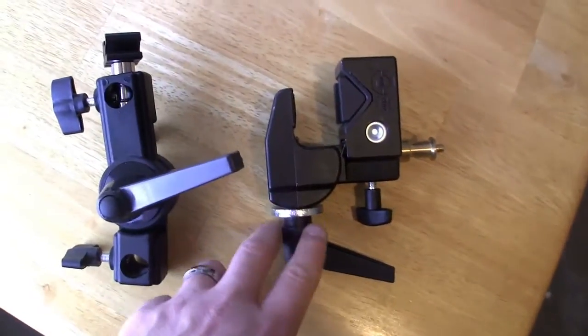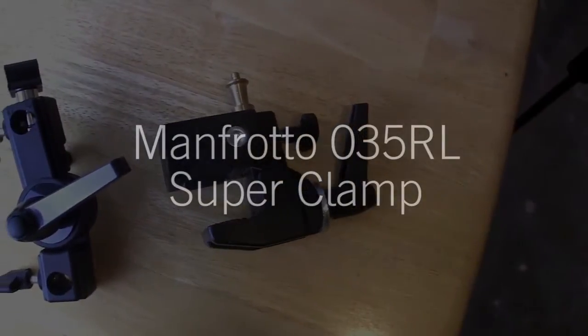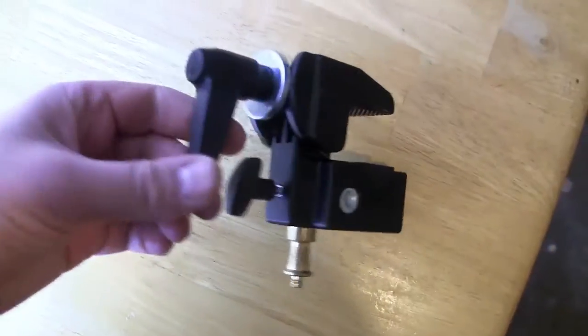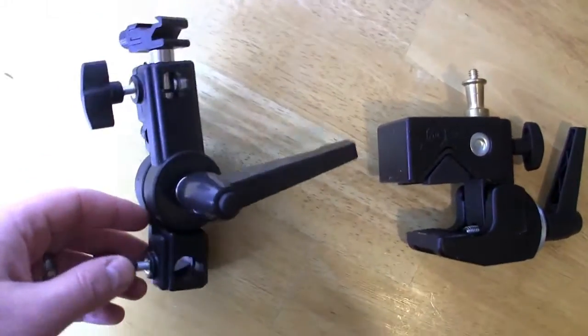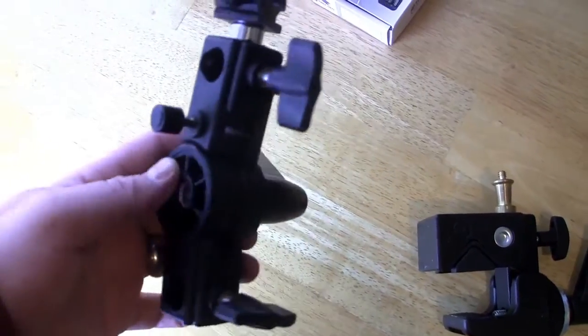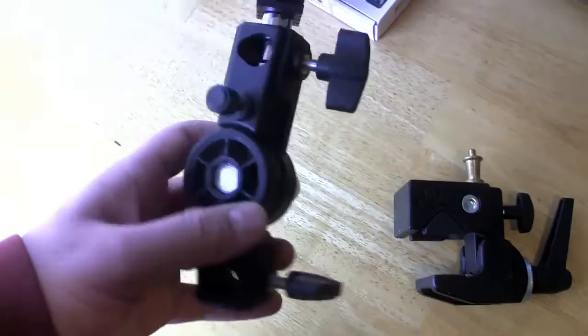This is a Manfrotto utility clamp from Manfrotto, and this is a $12 sort of generic flash and umbrella clamp for the top of a light pole.